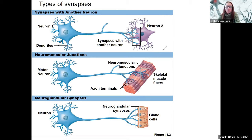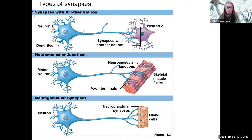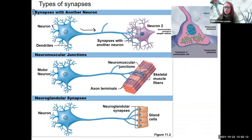So here are the ways that neurons can synapse one with another neuron. Here is neuron one, receiving information, with an electrical signal traveling this way, and we zoom into this location here. We'll see what will be the focus of next week.